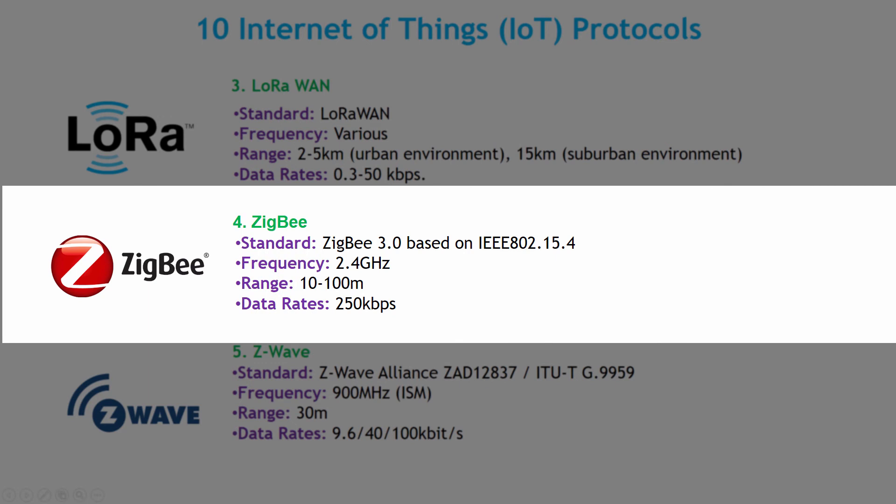ZigBee is another one of the most important protocols widely used in the Internet of Things. Similarly, it operates on 2.4 GHz like Bluetooth and Wi-Fi. Its standard is ZigBee 3.0 based on the IEEE 802.15.4 standard, its data rate is around 250 kbps, and its physical range is around 10 m to 100 m.